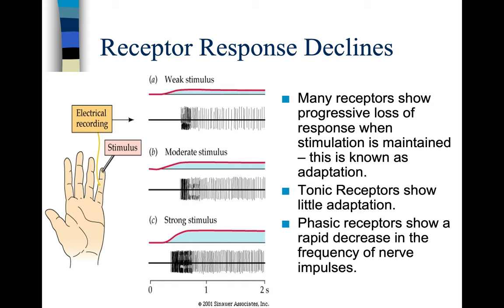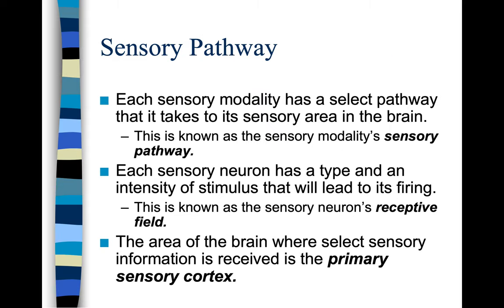Tonic receptors show little adaptation, while phasic receptors show a rapid decrease in the frequency of nerve impulses.